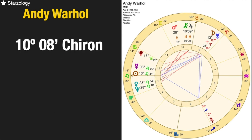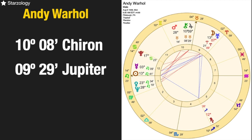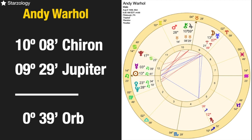In his chart, Chiron is at 10 degrees 8 minutes Taurus, and Jupiter is at 9 degrees 29 minutes Taurus. They are conjoined, but we want to see if they are actually the tightest aspect. You subtract one degree from the other and you get the orb, which is zero degrees 39 minutes. So Chiron and Jupiter are as close as zero degrees 39 minutes in orb for that conjunction — that's the first one we put on our list.